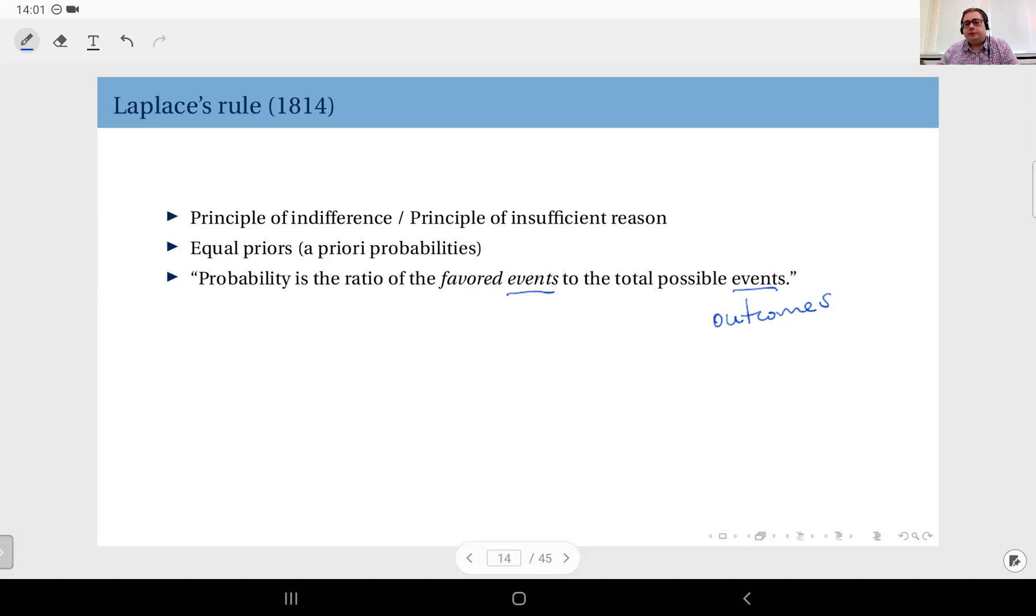Unless you have a reason to assign unequal probabilities to different outcomes, the only reasonable assignment you can give to the probabilities are just equal. Because you have a number of possible outcomes and you have no further information about the nature of the random experiment and the nature of those outcomes—when they occur, according to what they occur—if you have no information...